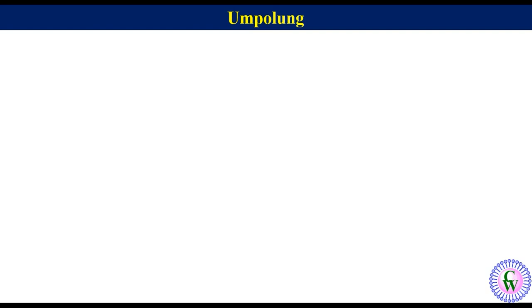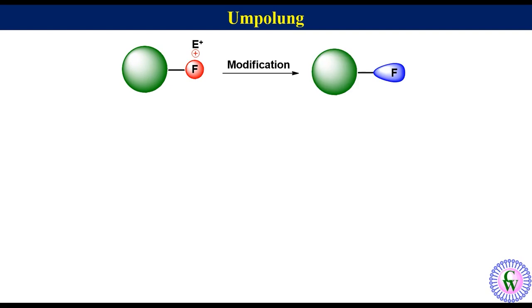Let's start with the basic understanding of umpolung. In an organic molecule, different functional groups have their inherent, also called normal, polarity, and based on that they can behave either as a nucleophile or an electrophile. Suppose we have a hypothetical molecule that has a functional group F with inherent positive polarity, behaving as an electrophile. If we modify it to give negative polarity, it now behaves as a nucleophile. This reversal of polarity of a functional group is called umpolung. This modification allows reactions of functional groups that would otherwise not be possible.